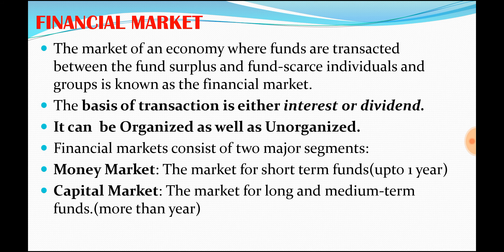The financial market can be organized or it can also be unorganized. Based on the time period, financial markets are divided into two major segments. One is money market where there will be short term lending — short term funds are transacting, that is up to one year. And in the capital market, there will be medium term and long term transactions, so above one year. The difference between money market and capital market is the time period — it is not about the value.